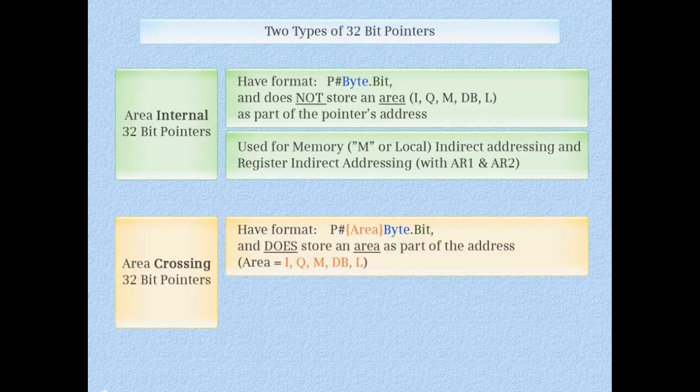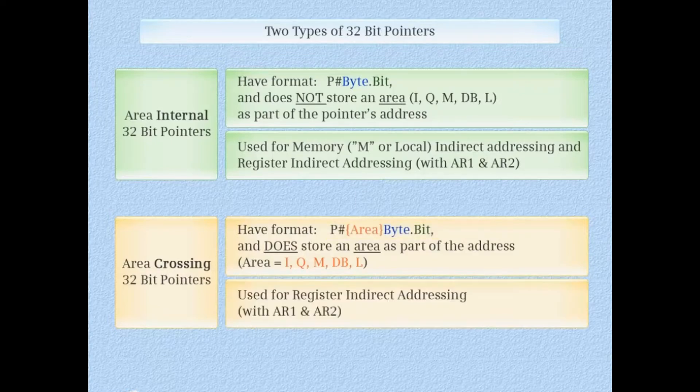32-bit area crossing pointers have the format P# area byte address dot bit address and do contain the area as part of the pointer's address. Area crossing pointers are used for register indirect addressing with AR1 and AR2.